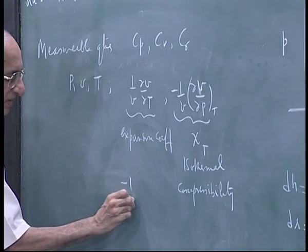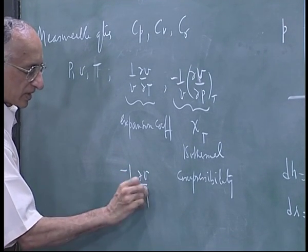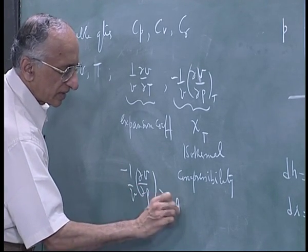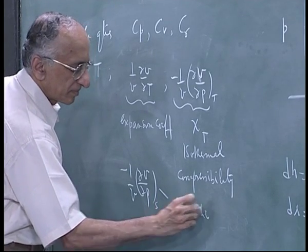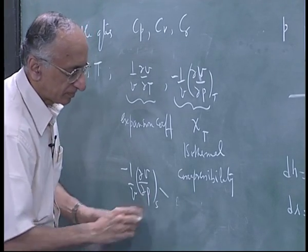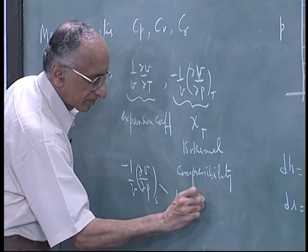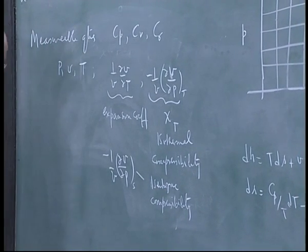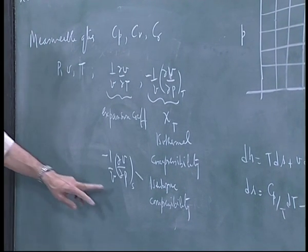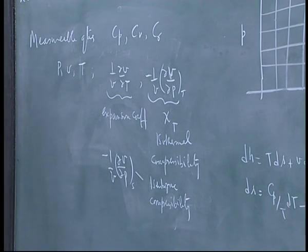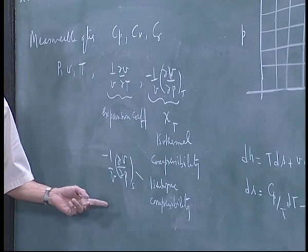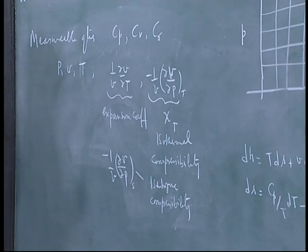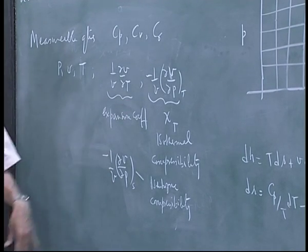The isentropic compressibility, or adiabatic compressibility under reversible conditions, is of experimental importance because it is directly related to the velocity of sound measurements in a fluid. Velocity of sound is relatively easy to measure compared to most thermodynamic properties. So this is an important property — this is χ_s.